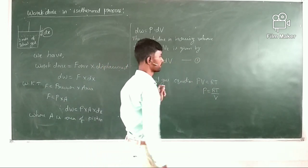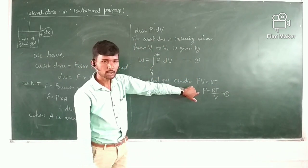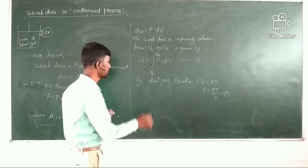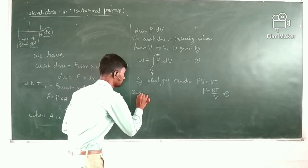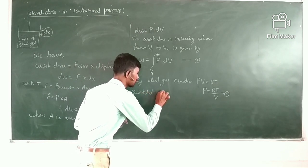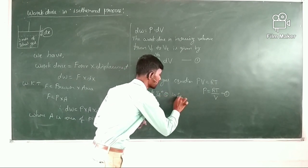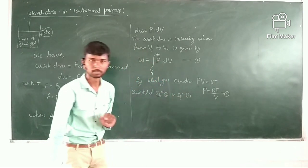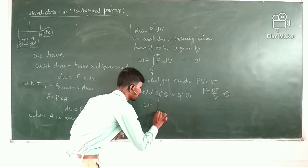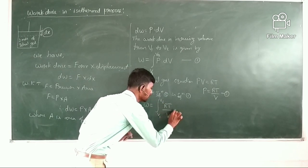Taking the ideal gas equation as equation 2, we substitute equation 2 into equation 1. Therefore, W is equal to the integral from V1 to V2 of RT divided by V, dV.